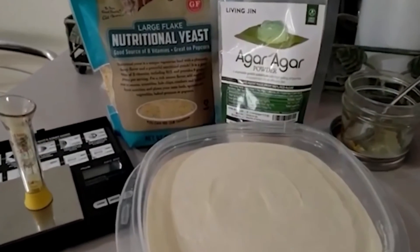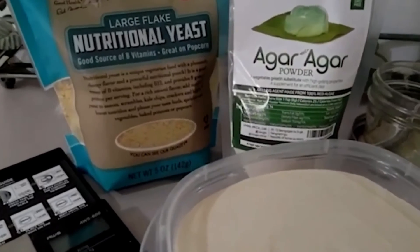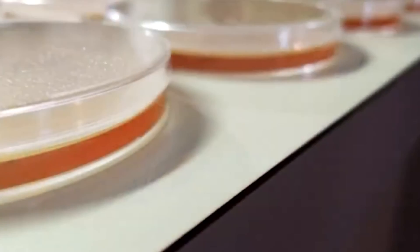MYA, or malt yeast agar, is an amazing agar recipe. This recipe gives the perfect nutritional source from the malt extract, but the addition of nutritional yeast will promote that booming rhizomorphic growth in your mycelium cultures.